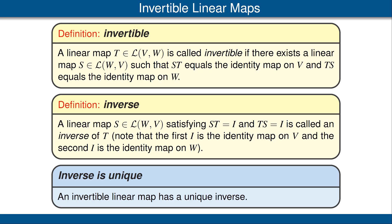Note that in the definition above we called S an inverse of T. Actually, the next result would allow us to call S the inverse of T, because an invertible linear map has a unique inverse. The proof is easy, and you can read it in the book.